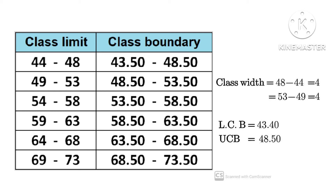For class limit, it is starting with a different number entirely — we have 44 to 48, then 49 to 53, 53 to 54. Class limit is also called class interval, please take note of that. For class boundary, we have 43.50 to 48.50, then 48.50 to 53.50. That is the difference between class limit and class boundary. Class limit is also known as class interval.